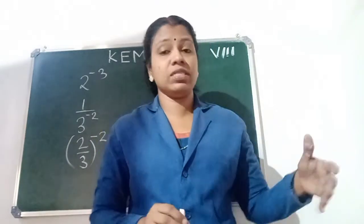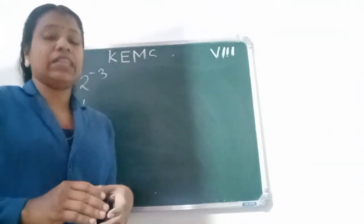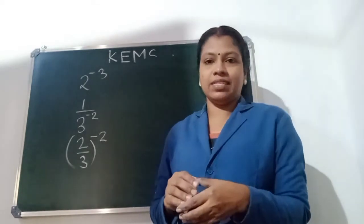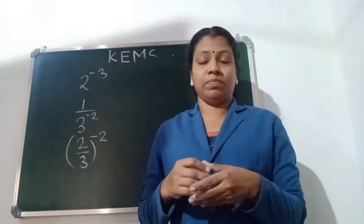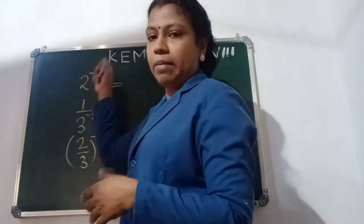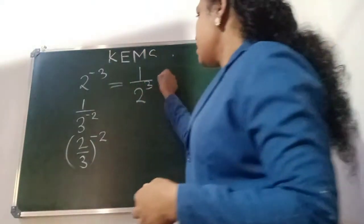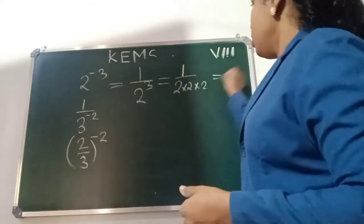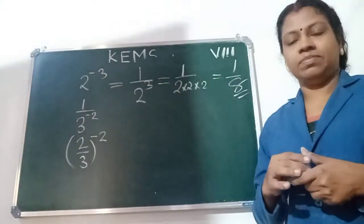Let us solve some examples using the laws of exponents. First: find the value of 2 power minus 3. We apply the law A power minus M equals 1 by A raised to M. Here A equals 2, M equals 3. So 2 power minus 3 equals 1 by 2 power 3, which is 1 by 2 into 2 into 2, equal to 1 by 8.